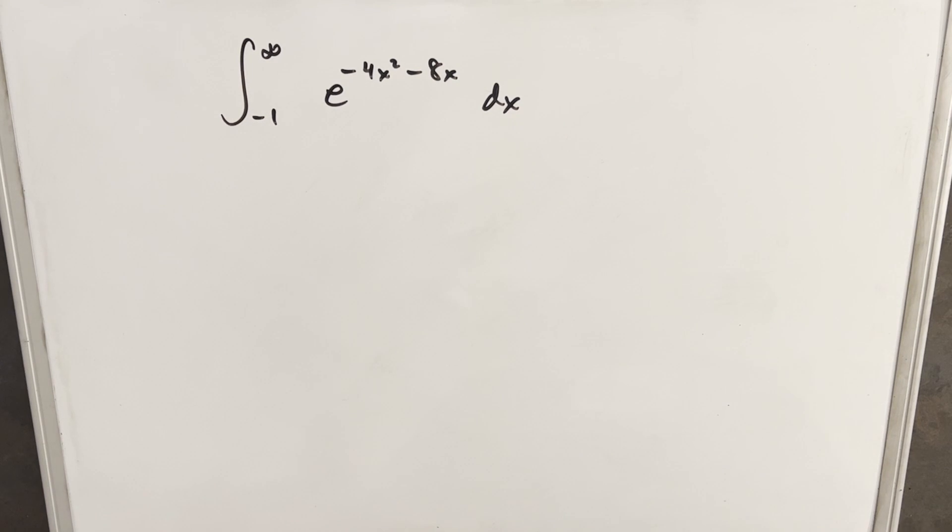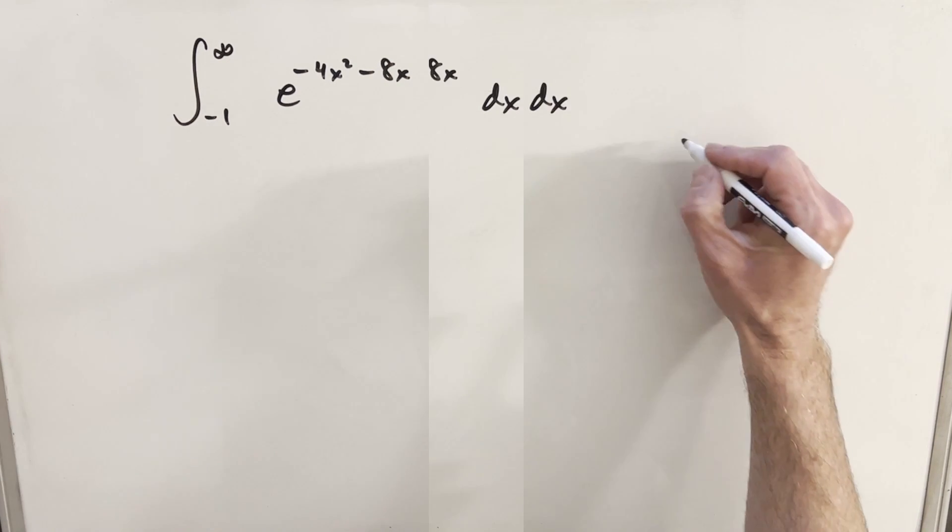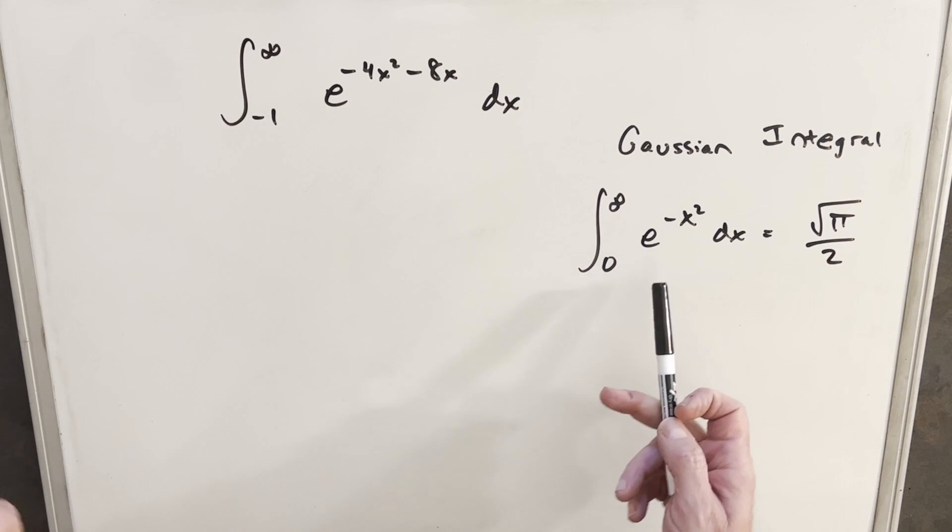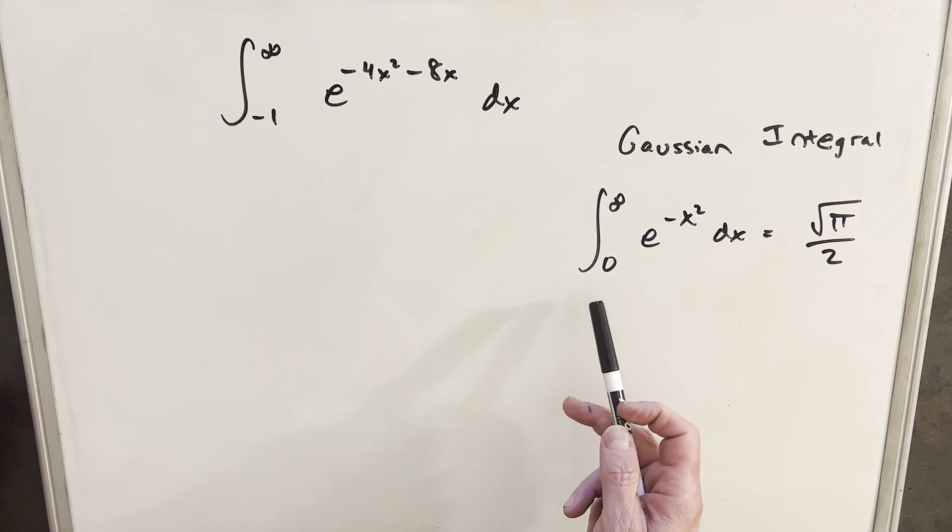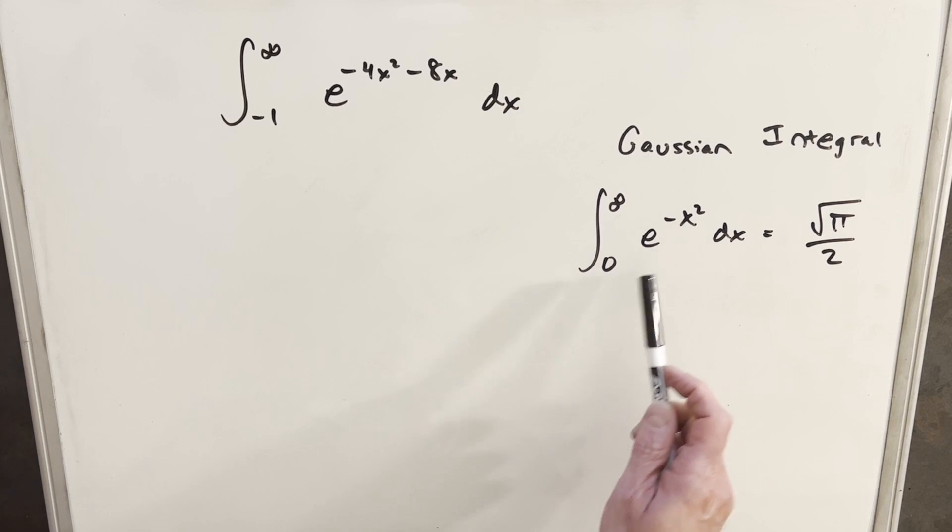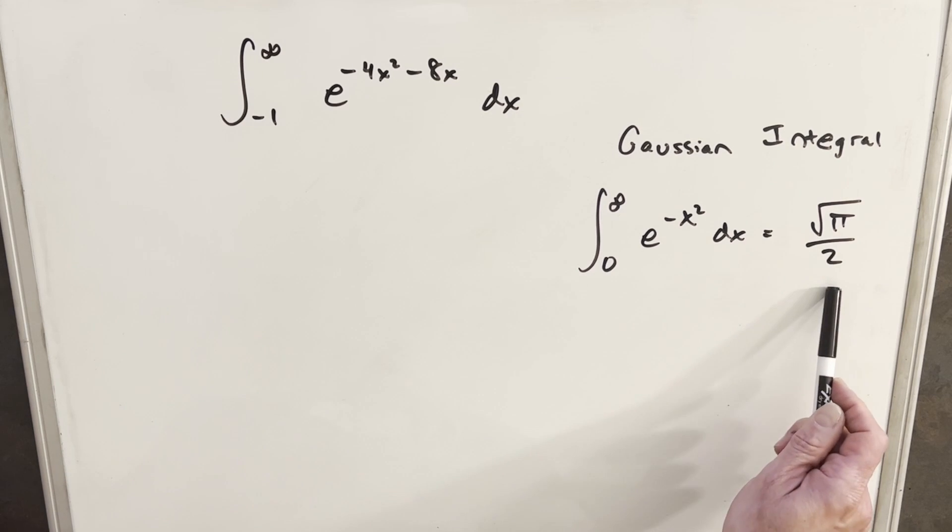But anyway, before we start worrying about all that, let's just look at the Gaussian integral first. We have a formula over here on the right. Now, you may be more familiar with this. It's often written as minus infinity to infinity, but because it's an even function, we can write it from 0 to infinity and just take half of it.